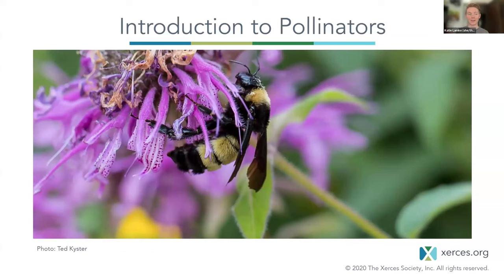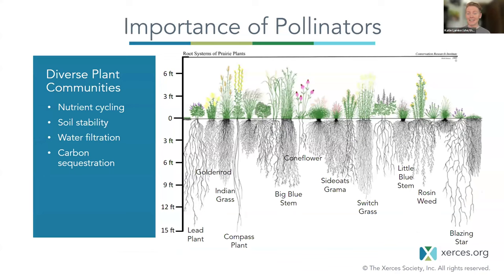This morning I'll start with a brief introduction to pollinators in general to orient you to where bumblebees fit. First and foremost, pollinators provide pollination services — transferring pollen grains and helping plants reproduce. In natural areas, urban gardens, and agricultural areas, plant diversity is important for healthy ecosystems. Plants cycle nutrients in the soil, provide soil stability, filter water, sequester carbon, and provide habitat. Pollinators have a huge role in maintaining these diverse plant communities.